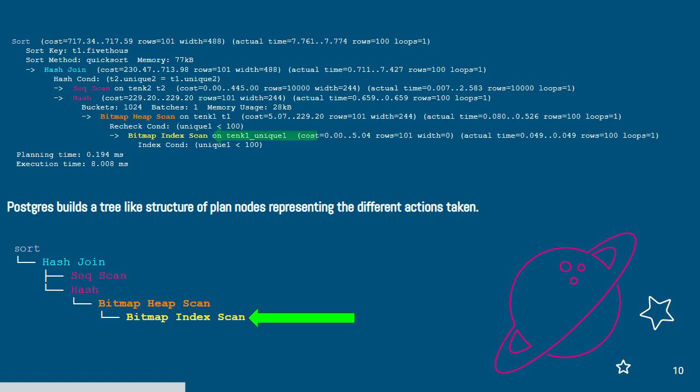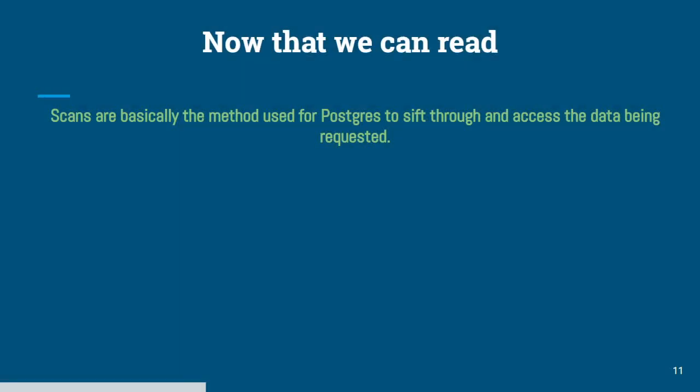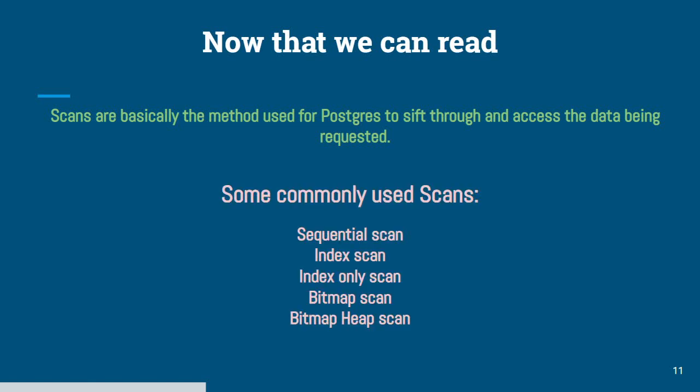There we go. That's what I was trying to say. So that's where the query planner will start when it initially starts running the query. Now that we can read, let's talk about scans. Scans are basically the method used for Postgres to sift and find the data that is being requested. Here are some of the commonly used scans that we'll be looking at today. This does not include everything, and we'll just be going over it briefly as it's a beginner's talk.